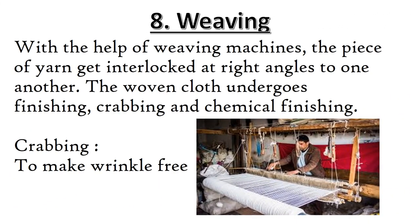At last, after going through all these steps, weaving is the final step. With the help of weaving machines, pieces of yarn get interlocked at right angles to one another. The woven cloth undergoes finishing, crabbing, and chemical finishing. Crabbing means to make the cloth or fiber wrinkle-free.